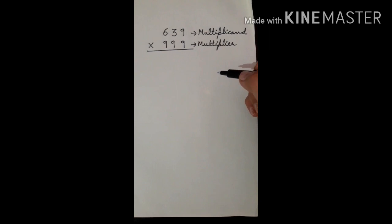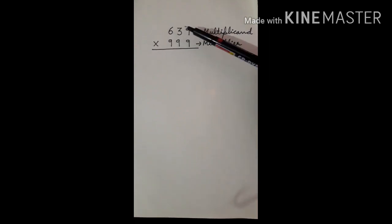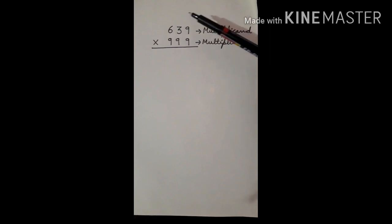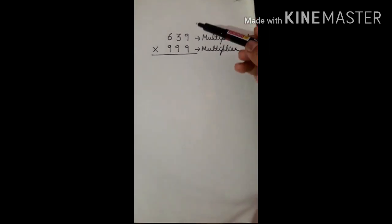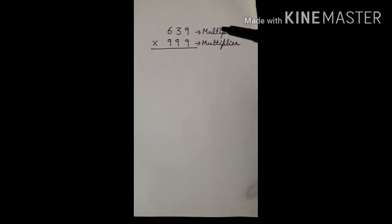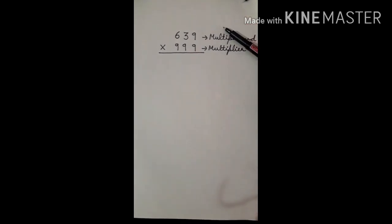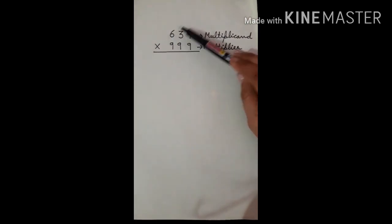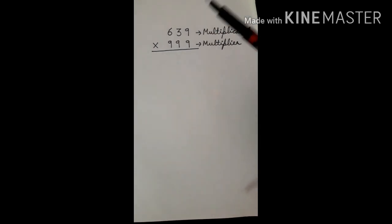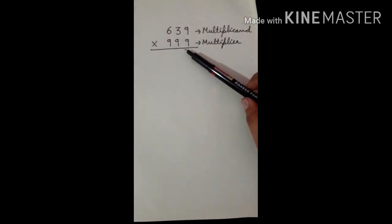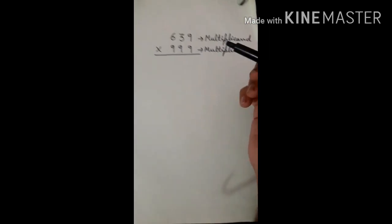Now, we will take one video to explain it more. Let's take the examples in a video. I have taken two numbers: 639 and 999. As you can see, 639 is a multiplicand and 999 is a multiplier. Before applying this trick, we have to see that the specific method is only applicable when the multiplicand and the multiplier have the same number of digits. This is a 3-digit number, and the multiplier is also a 3-digit number, so this trick is applicable.